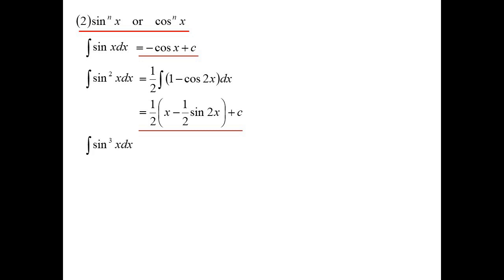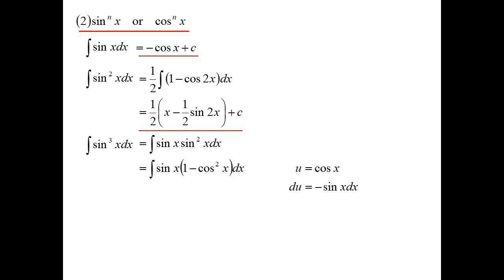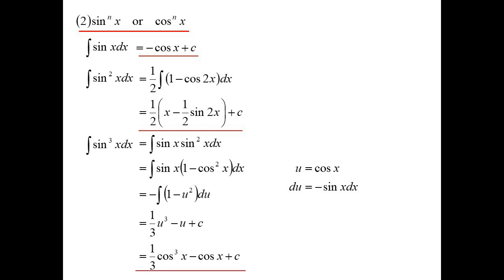How do we handle sine cubed? We don't have an identity that involves sine cubed, so with integration it's either going to be a substitution — get it in the form derivative times function — or we're going to have to use parts. For sine cubed, I'm going to split it as sine x times sine squared. The reason I do that is sine squared, I can use an identity and make it 1 minus cos squared, giving me derivative times function. Doing the substitution u equals cos x, du is minus sine x dx, we get a third cos cubed minus cos x plus a constant.